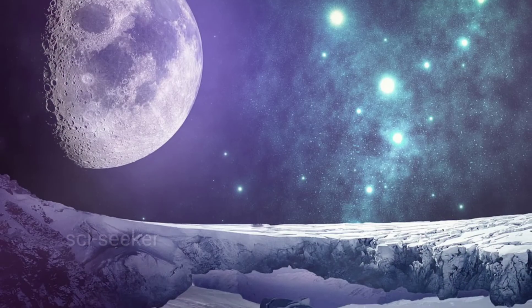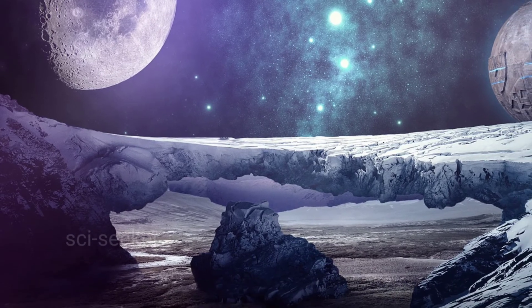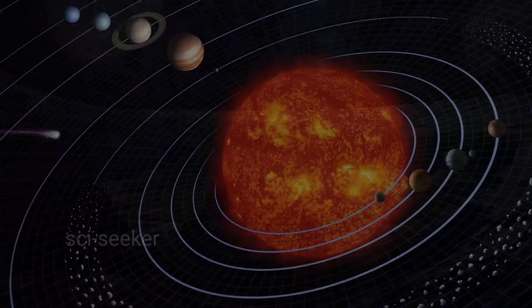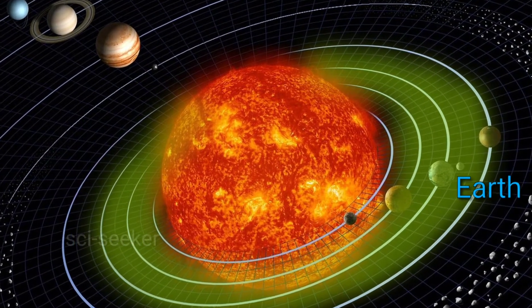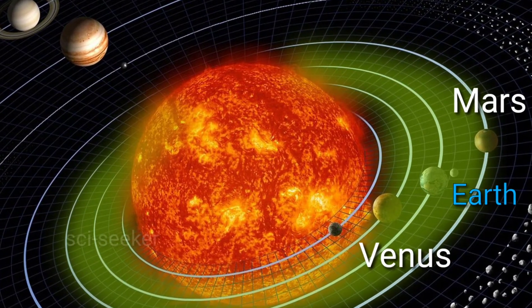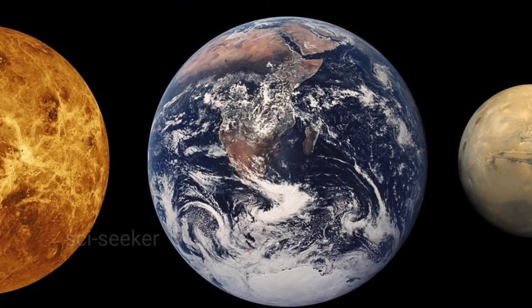Just because a planet or moon is in the habitable zone of a star doesn't mean it's going to have life or even liquid water. After all, Earth isn't the only planet in the Sun's habitable zone. Venus and Mars are also in this habitable zone, but they are not habitable as Earth.